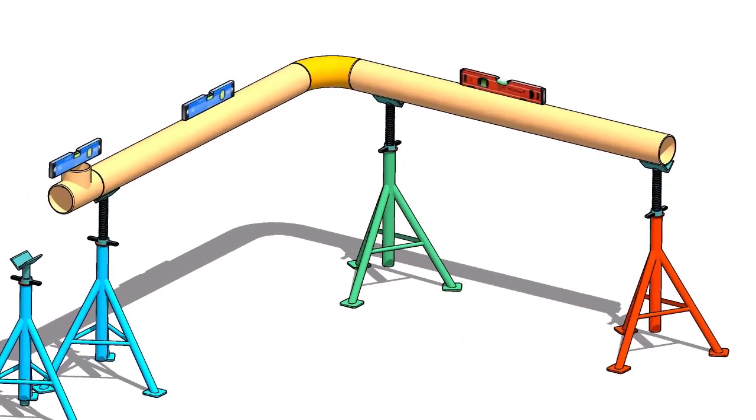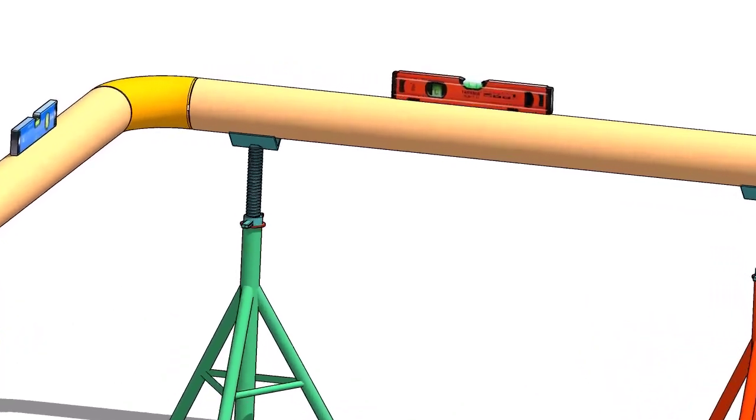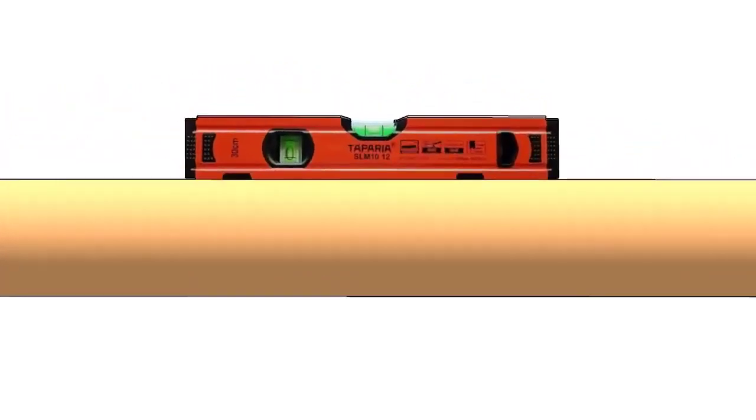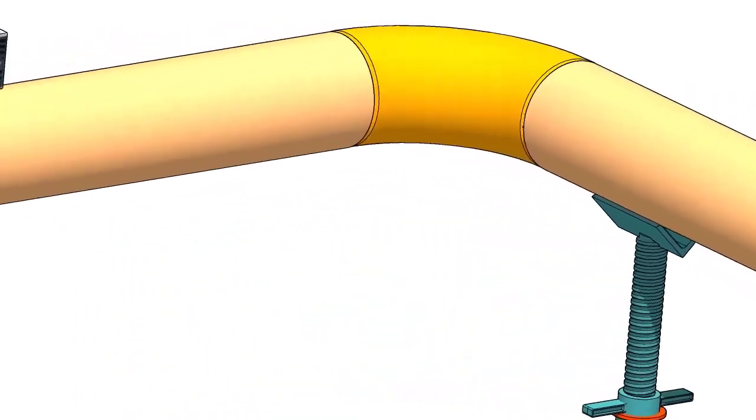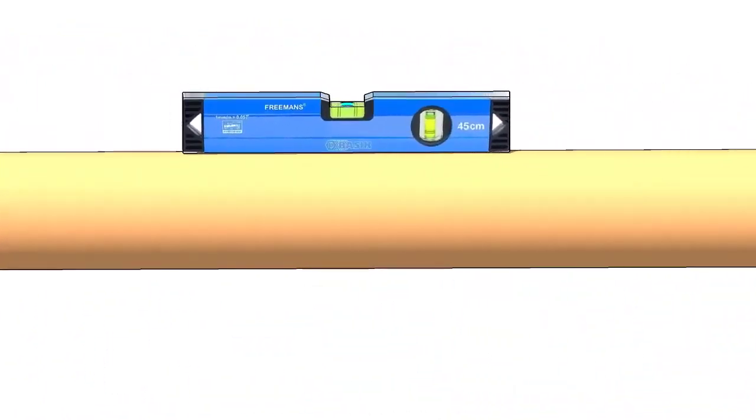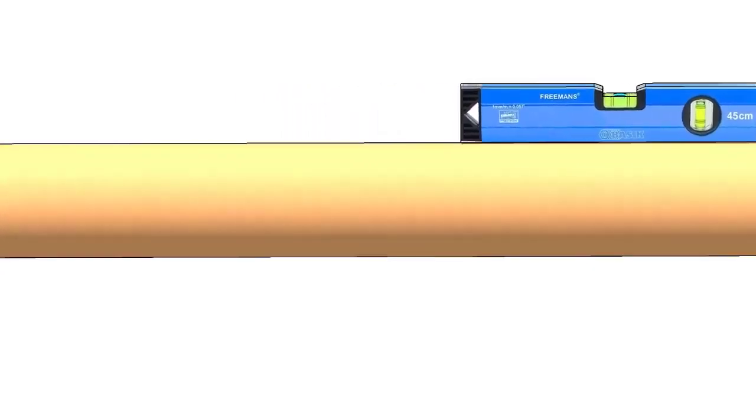First thing to do is to make sure the already fabricated spool's dimension and level are acceptable. Mark the center lines of the tee and the elbow.